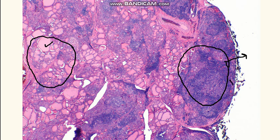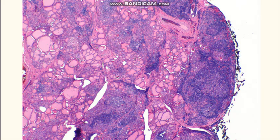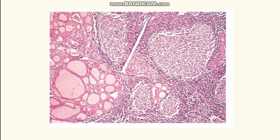Sometimes the lymphocytes get activated so much that they try to mimic a secondary lymphoid organ, and they even have germinal centers inside them. You can see in the next picture: this is the lymphocytes, this is the germinal center, and this is the normal thyroid. There is a majority of lymphocytes present.